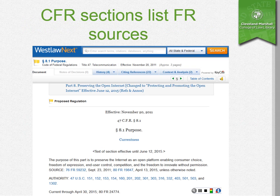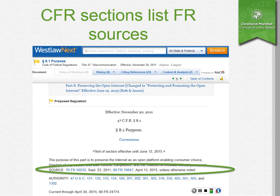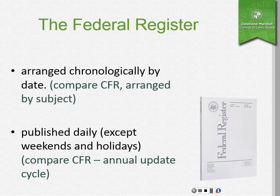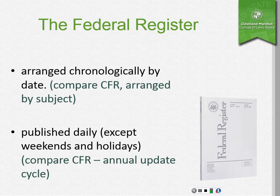Here we have a CFR section screenshot from Westlaw Next. It will show you where it comes from in the Federal Register — when it was created as a new regulation or if it's been amended. The Federal Register is arranged chronologically by date, whereas the CFR is arranged by subject, and the Federal Register is published daily.